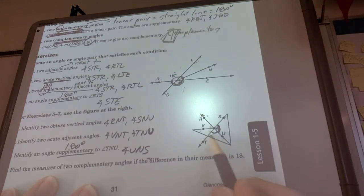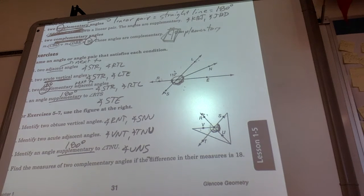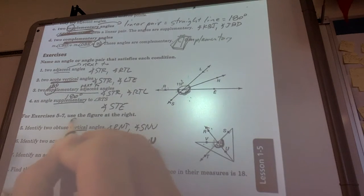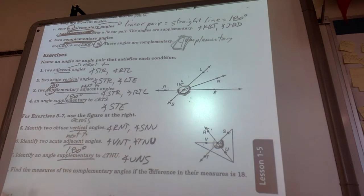Two acute adjacent angles. We've got these smaller ones in here that are next to each other. So VNT and TNU. These two right here, those two are acute and adjacent. They're next to each other. So again, I guess I should write out: vertical is across, adjacent is next to.